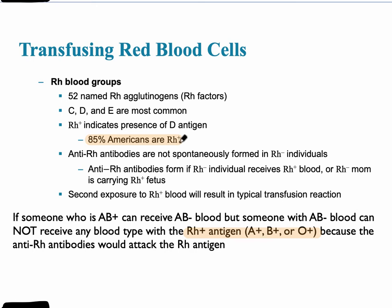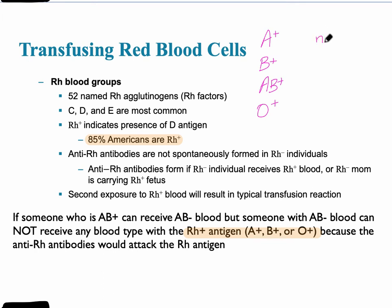If someone has AB positive blood, they can receive AB negative blood. Any RH positive person — whether A positive, B positive, AB positive, or O positive — can receive both positive and negative blood, because they already have the RH antigen and therefore don't have the RH antibody. So there's no RH antibody to attack the donor red blood cell.